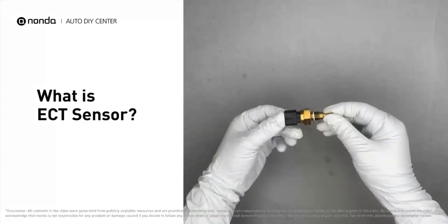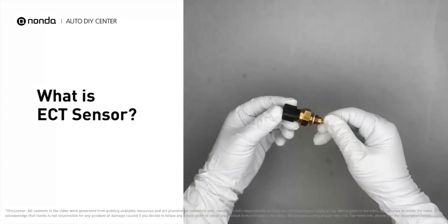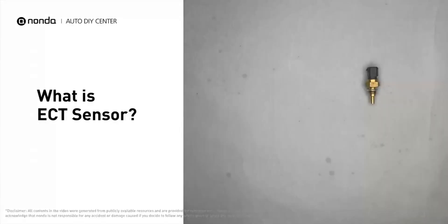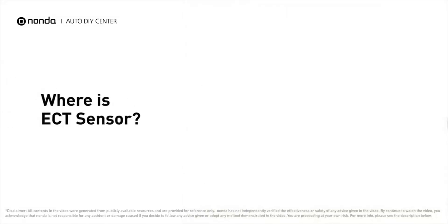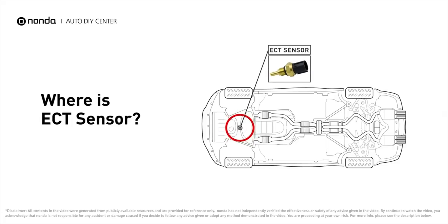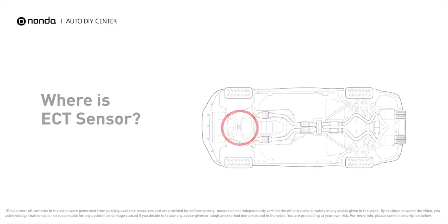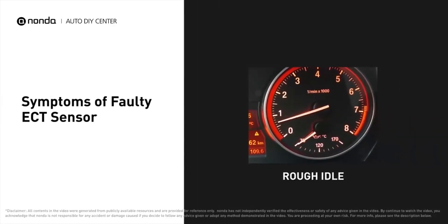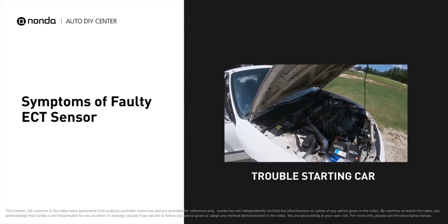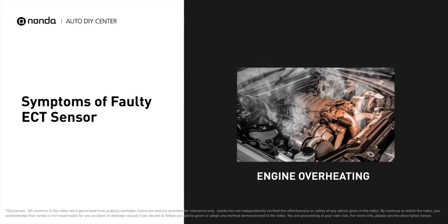The ECT sensor, or engine coolant temperature sensor, is an engine management system sensor used to monitor the temperature of the engine's coolant. The primary ECT sensor is installed near the thermostat in the cylinder head or block, or on the thermostat housing. A faulty ECT sensor can result in a rough idle, trouble starting your car, and engine overheating.